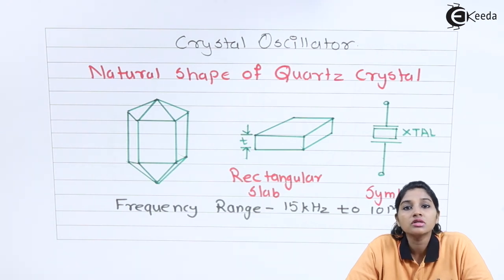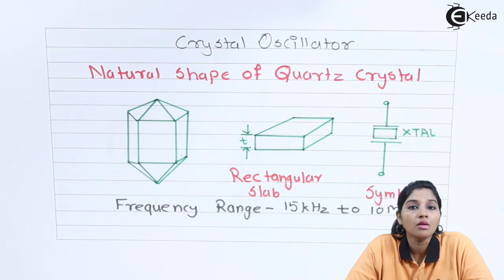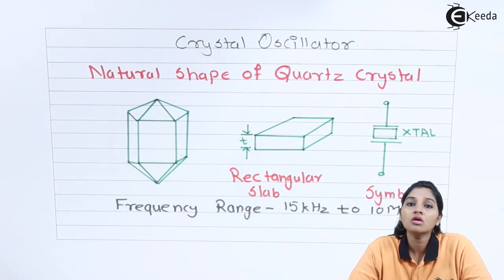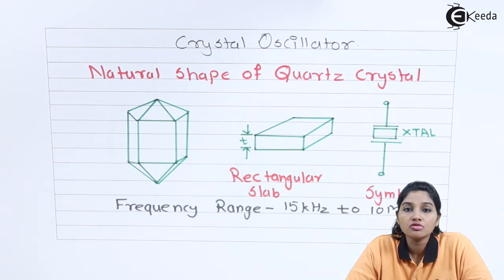Crystal oscillators are basically used to provide frequency ranges up to 10 MHz. For the construction of a crystal oscillator, a material called quartz crystal is used.